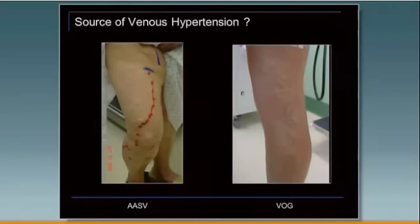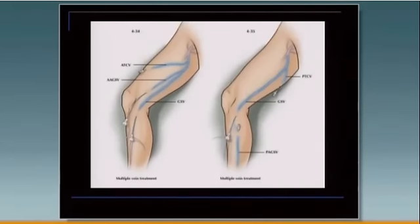The thigh extension is a small saphenous, usually presenting with posterior thigh varicosities. This could also be great saphenous, so you have to map it out with duplex, as we heard this morning.